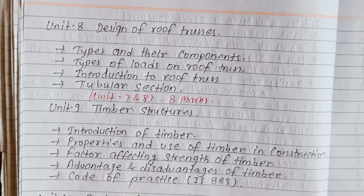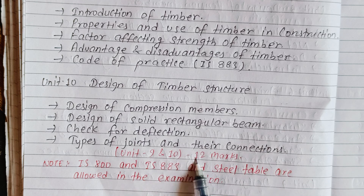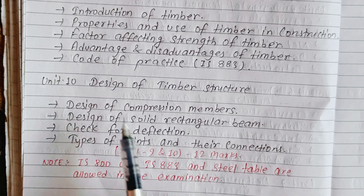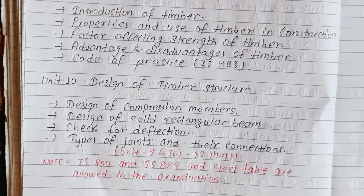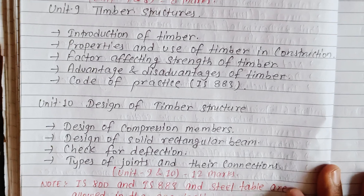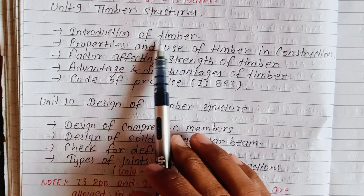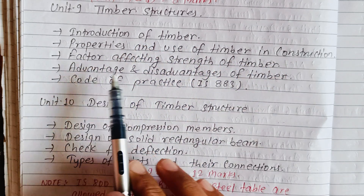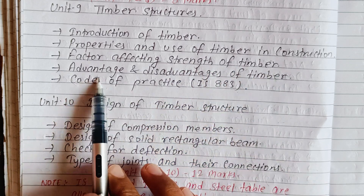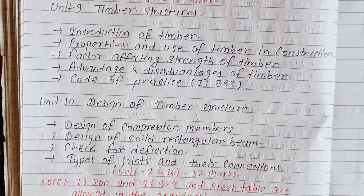The timber section carries 24 out of the 40 total marks. Unit 9 topics include: introduction of timber, properties and use of timber in construction, factors affecting strength of timber, advantages and disadvantages of timber, and code of practice IS 883.